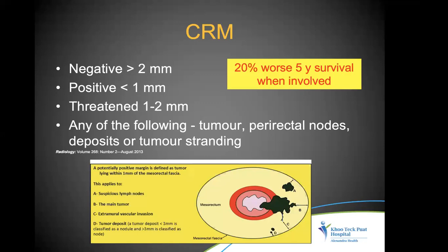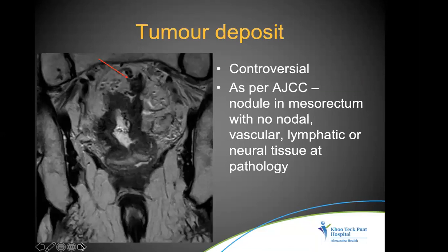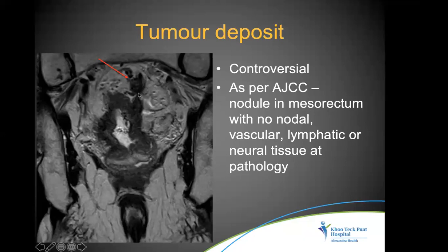Involvement of the circumferential resection margin or mesorectal fascia is important because five-year survival is 20% worse in such cases. Negative CRM means the tumor or node is more than 2 mm from the margin; positive CRM is less than 1 mm; threatened is 1–2 mm. The most important criterion is the tumor itself — other factors such as perirectal nodes or tumor deposits should be discussed in the tumor board. Predicting CRM positivity on MRI based solely on nodes should be avoided, as metastatic lymph nodes solely accounting for CRM involvement is very rare on pathology.